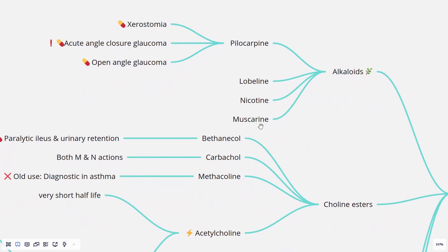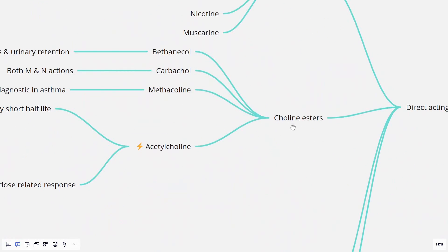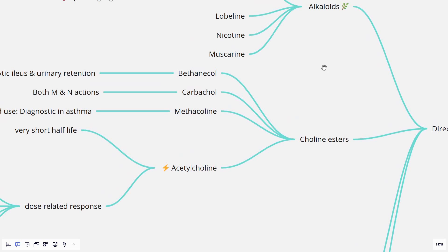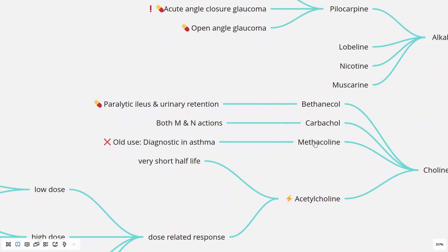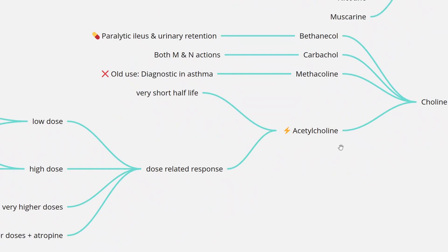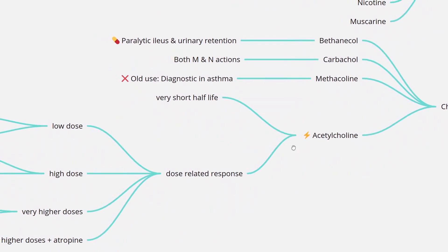Muscarine is present in certain mushrooms and can cause mushroom poisoning. Coming to cholinesters, they are clinically more useful compared to the alkaloids: we have bethanechol, carbachol, and methacholine. Bethanechol is used in the treatment of paralytic ileus and urinary retention. Carbachol is not used clinically because it has actions on both muscarinic and nicotinic receptors. Methacholine is also not used clinically these days. An older use was a diagnostic use in asthma, where methacholine was used to induce bronchoconstriction, which would be readily produced in patients who suffer from asthma. This is one of the tests not used these days because it produces asthma, which could be difficult in patients who develop status asthmaticus. Acetylcholine is not used as a drug, but it's important to understand certain properties of it.